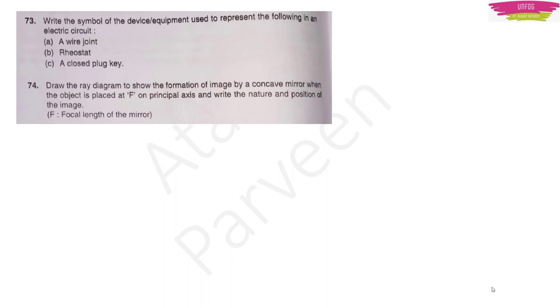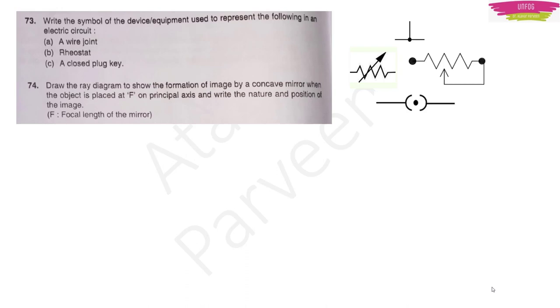Question 73: Write the symbols for the following devices in an electric circuit — wire joint, rheostat, and closed plug key. For a wire joint, it is a dot at the junction. For a rheostat, draw a resistor box with an arrow or mark R on it. For a closed plug key, draw the symbol with a dot inside; for open, there is no dot.